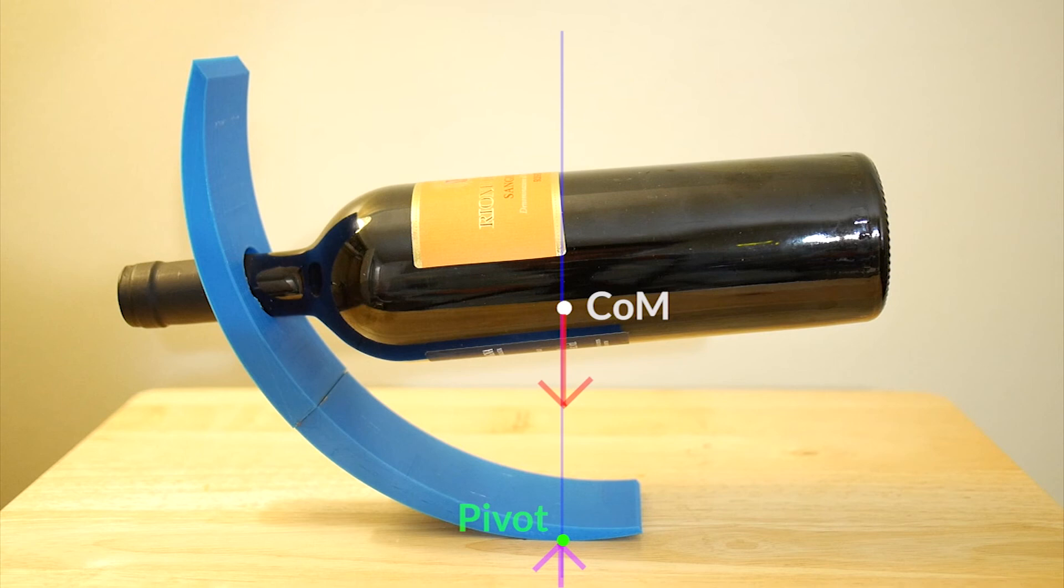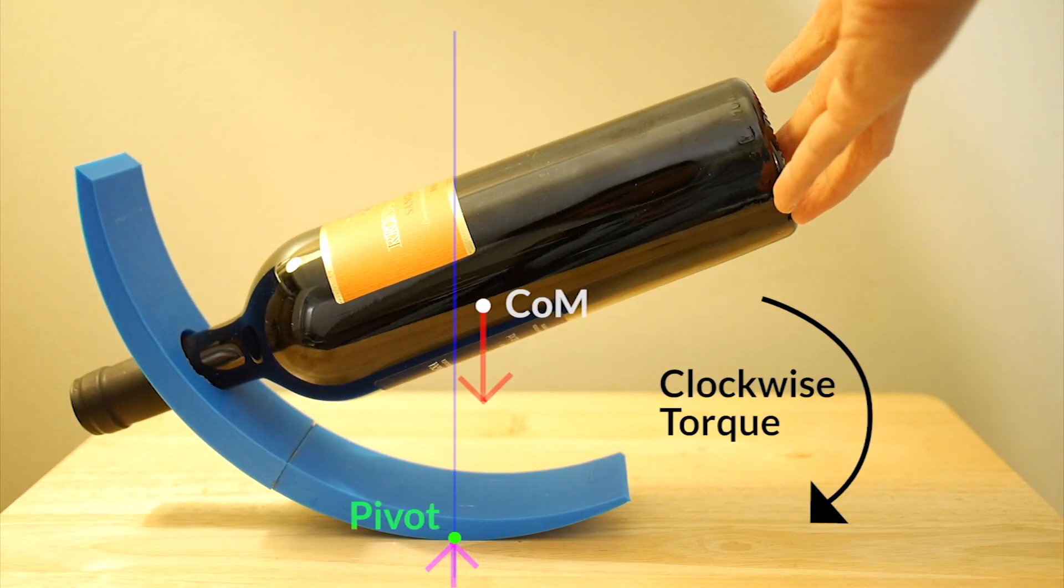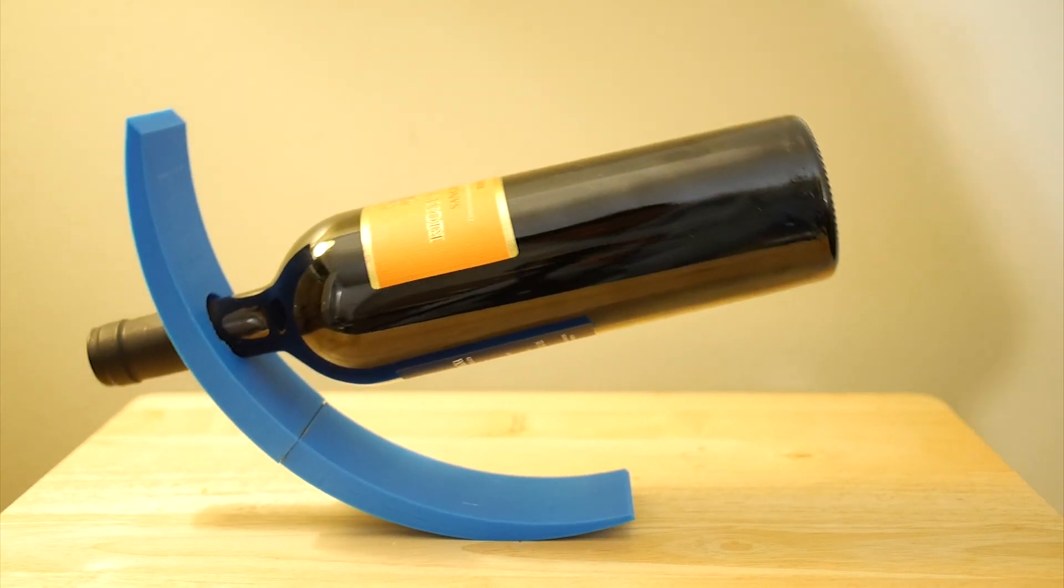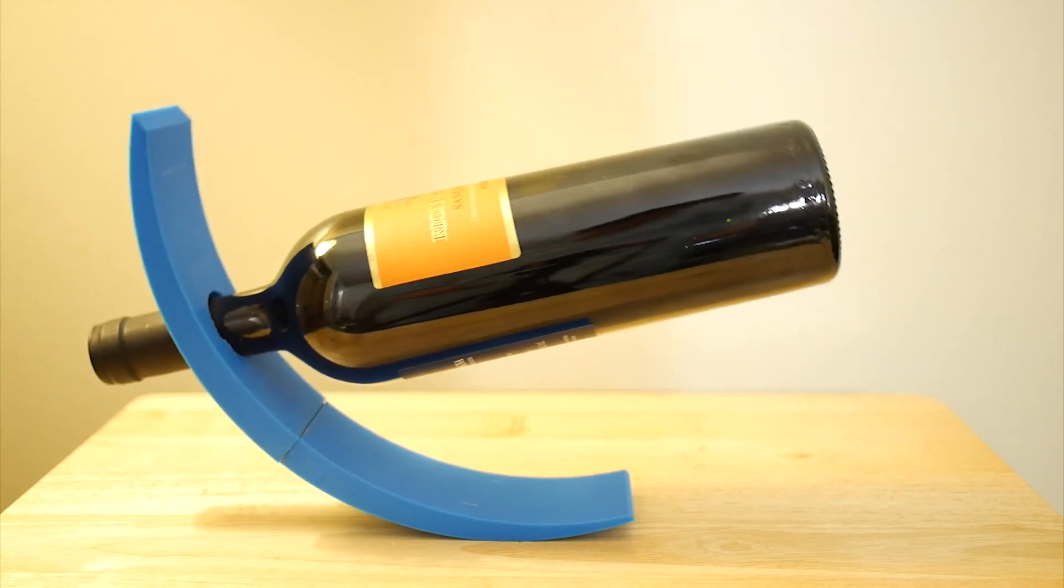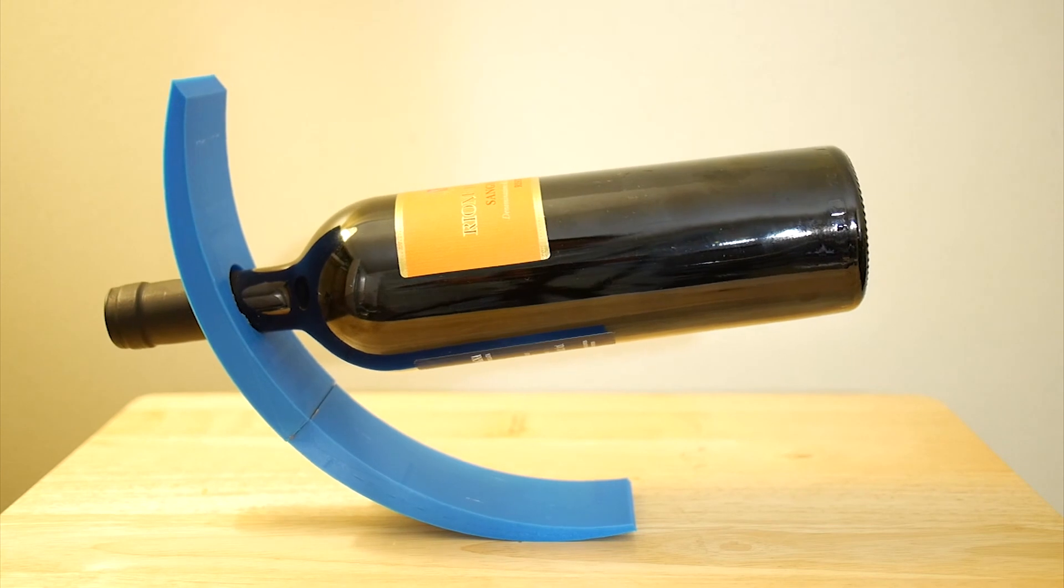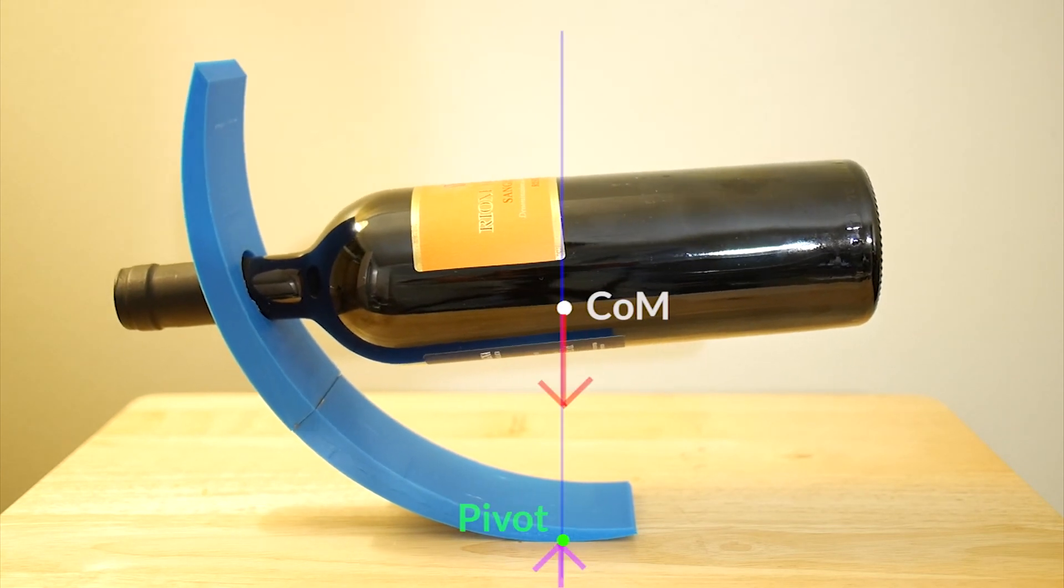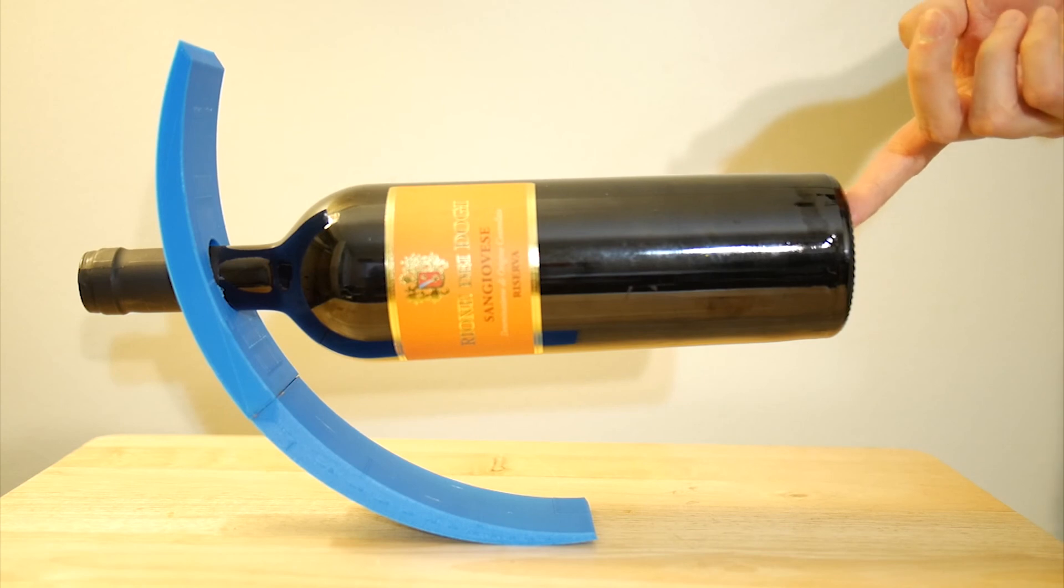But interesting things happen when I push this object. When I push, the pivot point actually moves to the left. Since the center of mass is the same, suddenly the torque is created, and it is this torque that rotates the object clockwise. When it rotates, the inertia of the object makes it overshoot from the original position, which creates the torque in opposite direction. So after some oscillation, eventually the wine holder becomes stable at the same original location. I found it pretty amazing that the object can find its perfect balance following simple physics.